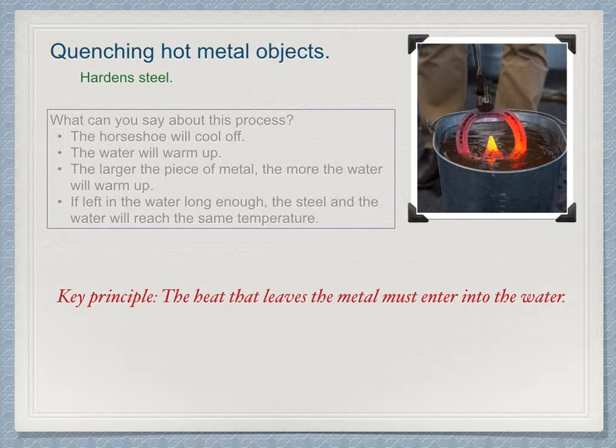The key principle to appreciate when tackling these problems is that any heat that leaves the metal must enter into the water. We will start by equating the heat flow. But getting the sign right is critical. The heat leaves the steel and enters the water. The two must be of the opposite sign. So we write that q_water must equal the negative of q_steel.